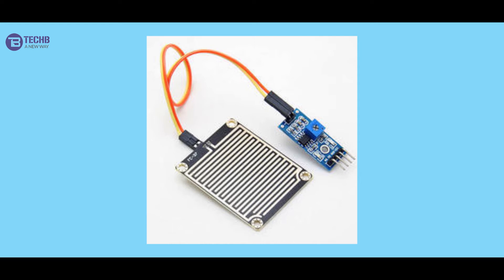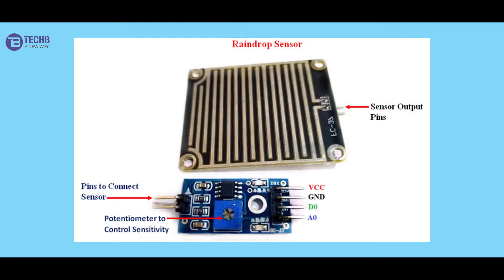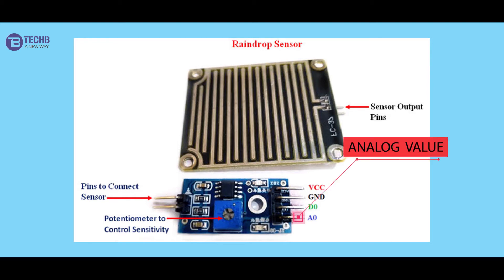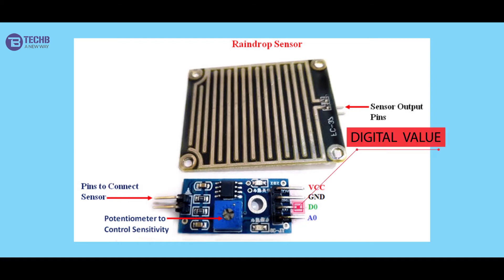Now I will talk about the main part. You can see a total of 4 pins: VCC and Ground, and A0 and D0. VCC and Ground are common pins. The two extra pins are A0, which carries the analog value, and D0, which carries the digital value.